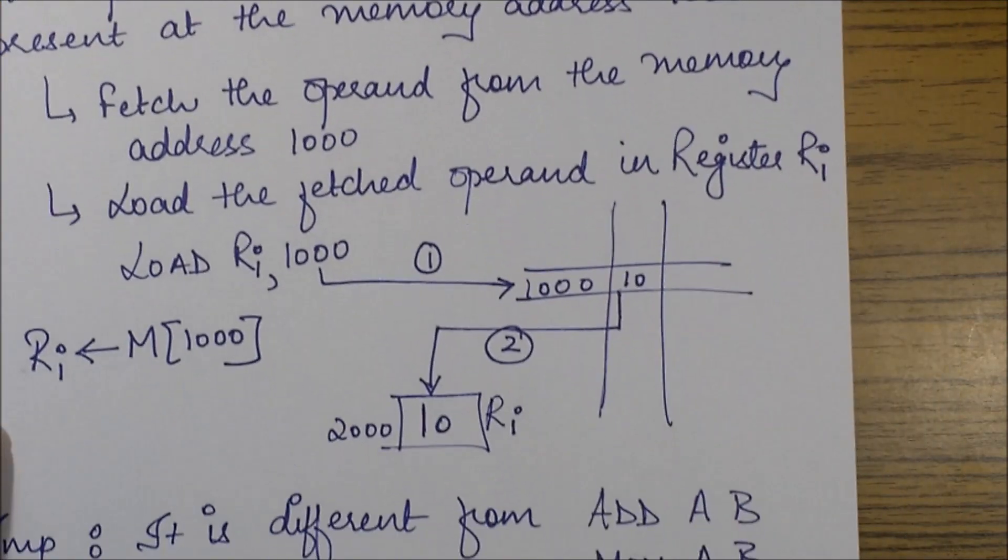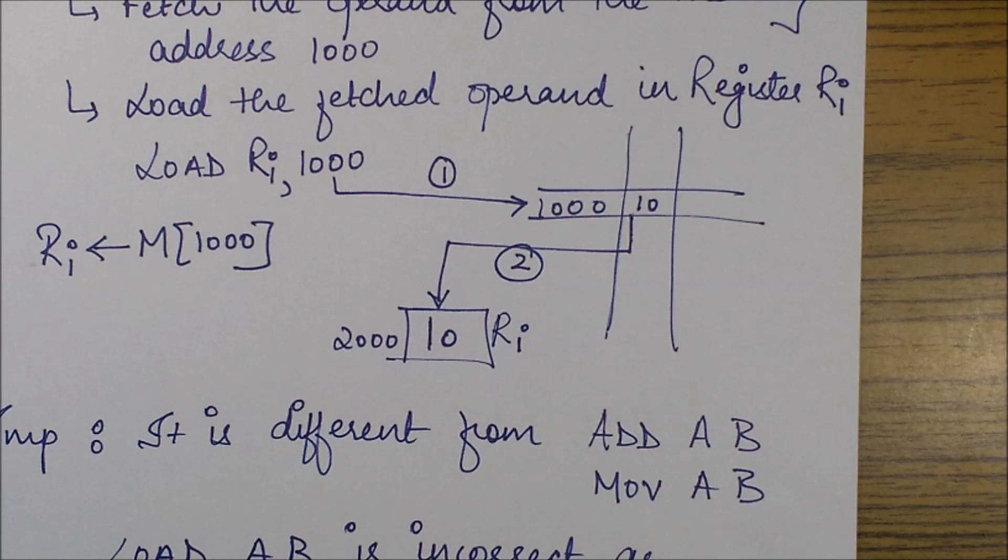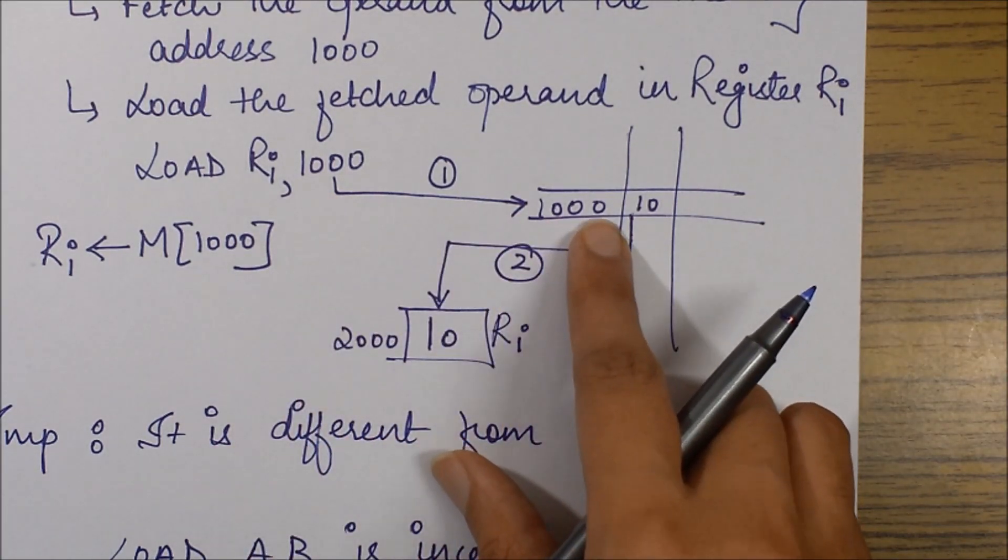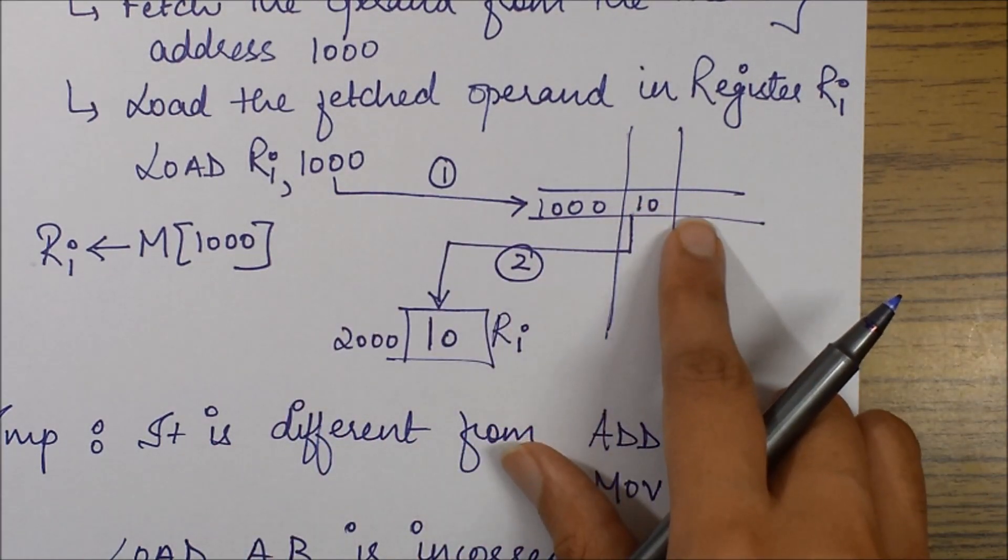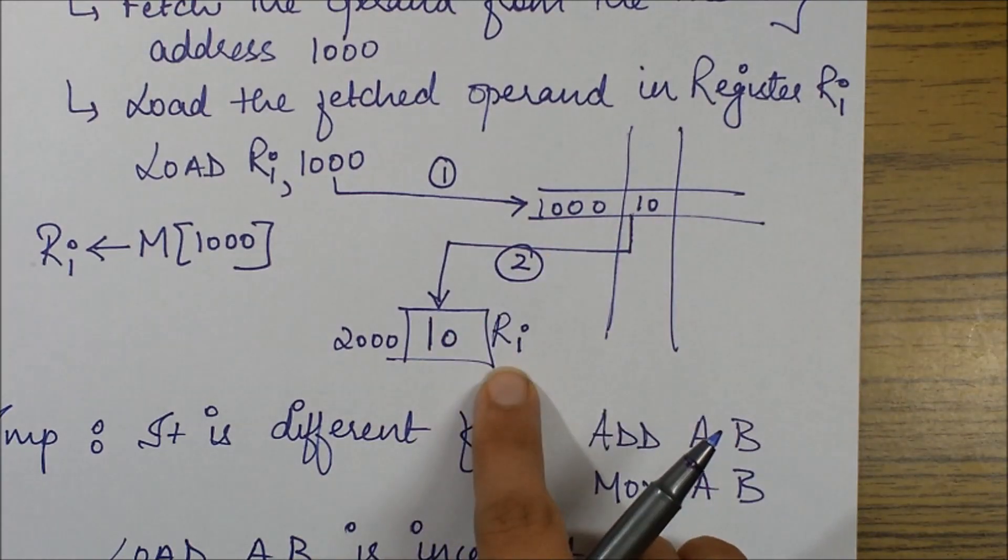So how does it work? First I go to the memory location 1000, I fetch the operand from there, and I load it into my RI.